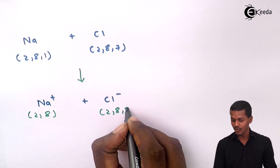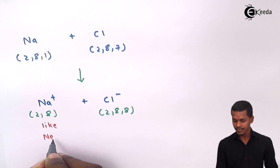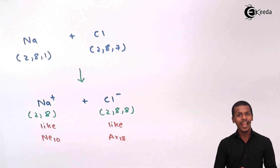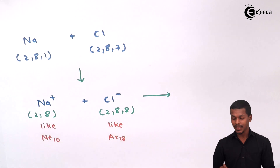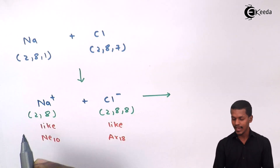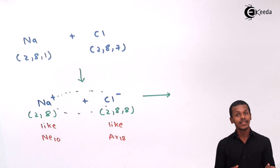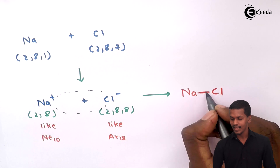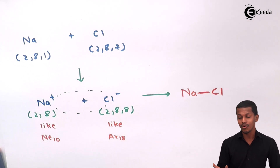Na⁺ now has the electronic configuration 2,8, behaving like neon. Meanwhile, chlorine, having accepted one electron, becomes Cl⁻ with configuration 2,8,8 — behaving like argon. Since they are converted into their respective ions, there is a force of attraction between them. This is the complete transfer of electrons, and that is how the ionic or electrovalent bond is formed in NaCl.